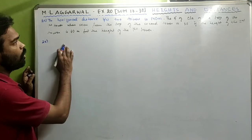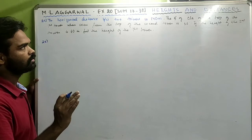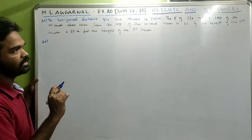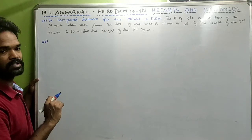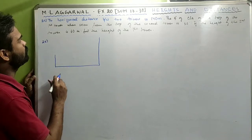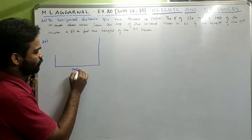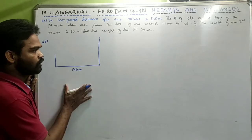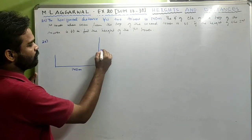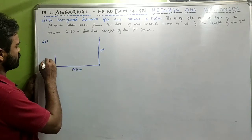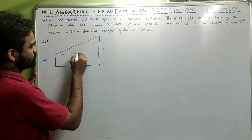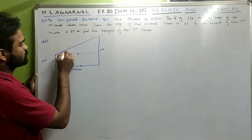Sum 25: The horizontal distance between two towers is 140 meters. The angle of elevation of the top of the first tower when seen from the top of the second tower is 30 degrees. The height of the second tower is 60 meters. Drawing the diagram carefully is key — construct AB parallel to DE, making a rectangle where AB = DE = 140 meters. The angle at the top is 30 degrees.